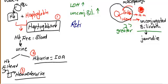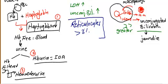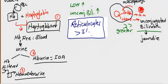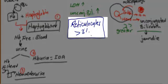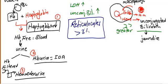Reticulocyte count, specifically the corrected reticulocyte count, is more than 3% in hemolytic anemia. This is because the main problem is the hemolysis itself, not the bone marrow, so the bone marrow still releases more reticulocytes. Once you see a patient with anemia, check the reticulocyte count first. If corrected reticulocyte count is more than 3%, that means hemolytic anemia — the bone marrow is functioning well and the problem is outside it, either intravascular or extravascular hemolysis.